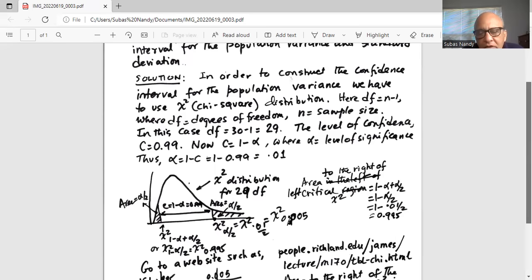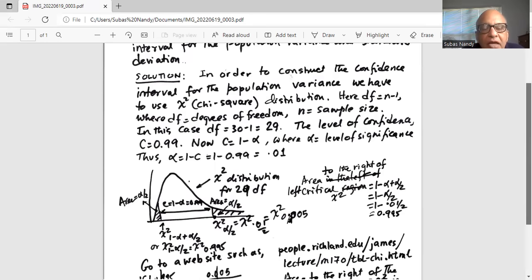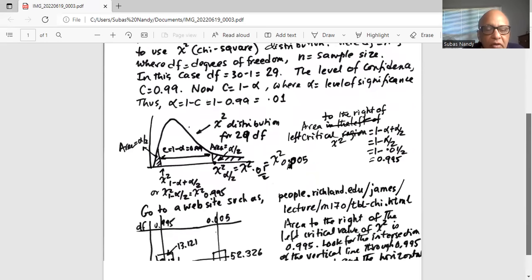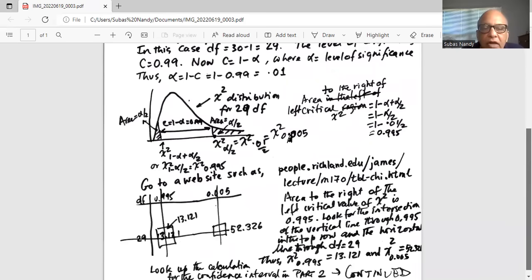Similarly, the area on the right tail to the right of the right critical value is alpha by 2, so that would be indicated by chi-square alpha by 2, or chi-square 0.005.